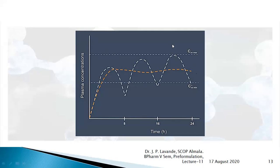If concentration exceeds CSS max, it produces side effects, adverse effects, and toxic effects. If the drug does not achieve the minimum steady state plasma concentration — if it remains below that level — it indicates under-medication, meaning there is no therapeutic effect. It is therefore necessary to maintain the concentration within the therapeutic range, which requires frequent dosing.